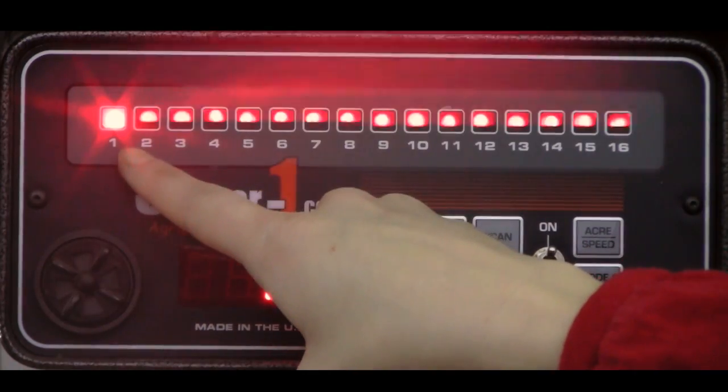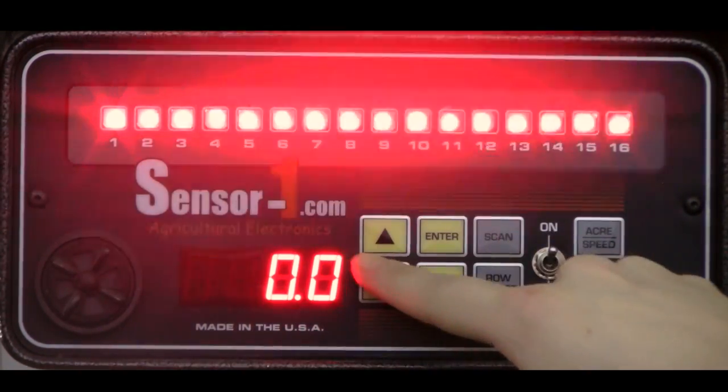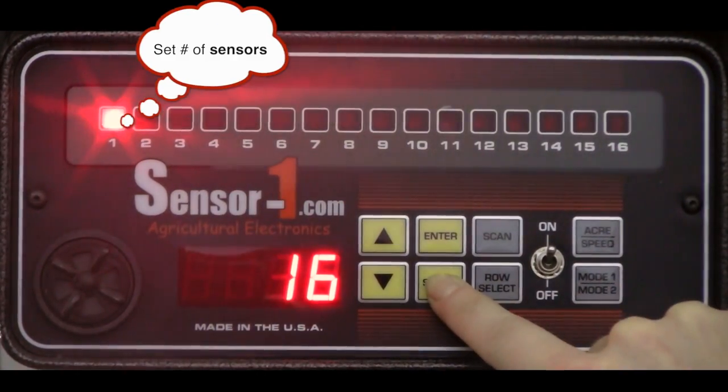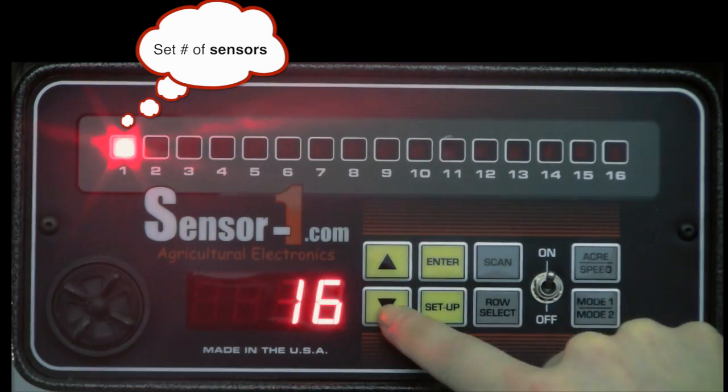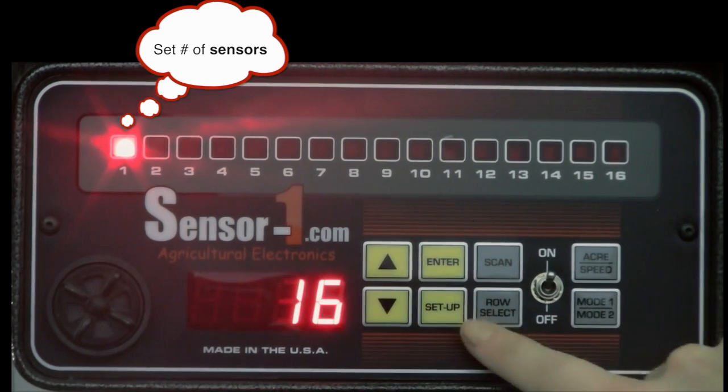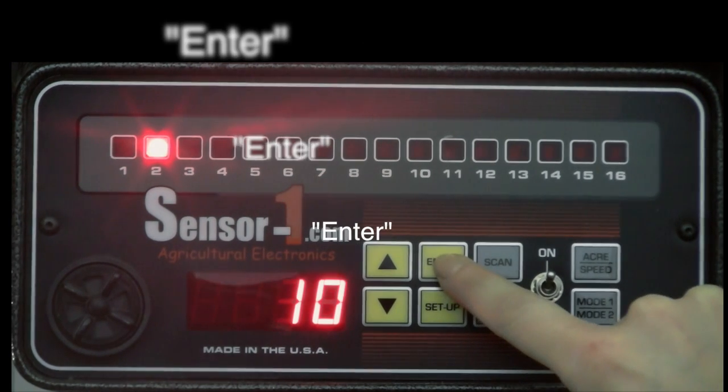When the monitor is ready to be set up, the light will remain on over row number 1. Press the setup button to enter the setup mode. From here, you will use the arrow keys to determine the number of sensors you want to use. Then press enter.